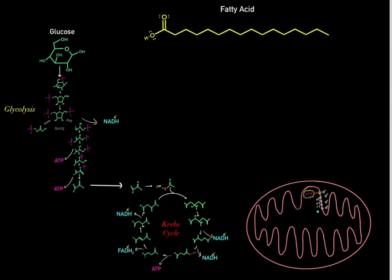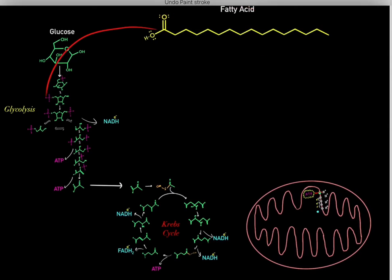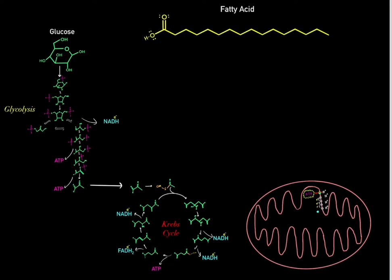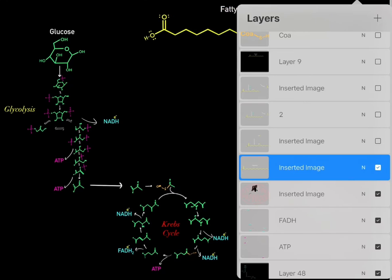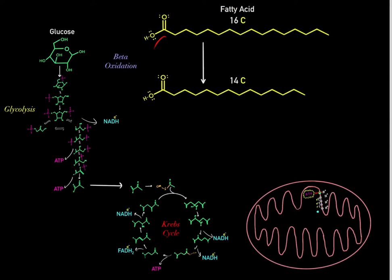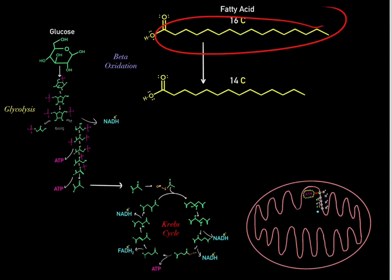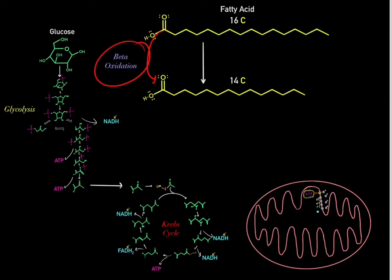Can we take free fatty acids to enter central metabolism to create ATP? No. If we want to use free fatty acids to create ATP, we need to go through a pathway called beta-oxidation. What's important to realize is that whenever we go through one round of beta-oxidation, the free fatty acid gets shorter — we lose two carbons every time.